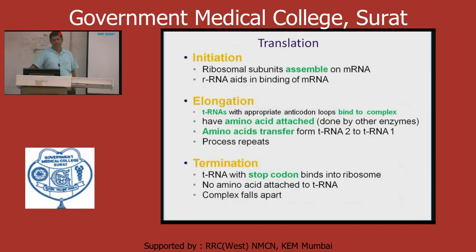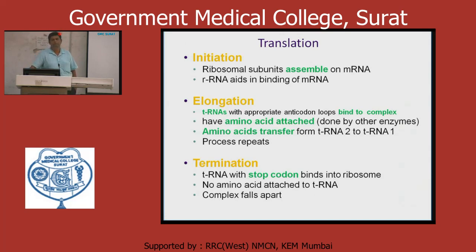Initiation: the ribosomal subunits assemble on mRNA — the large and small subunits come together. Elongation involves the P, A, and E sites. The tRNA comes to the particular amino acid. They make protein synthesis, and finally when stop codons are reached, termination occurs.